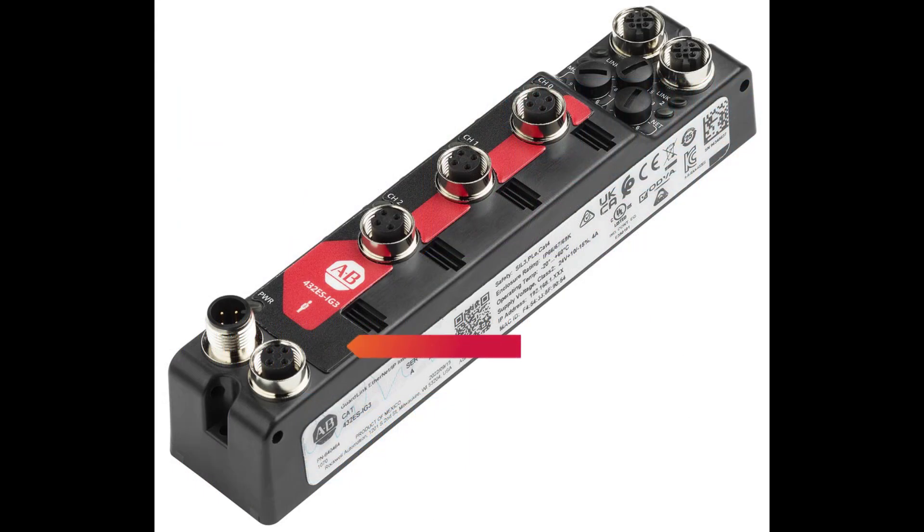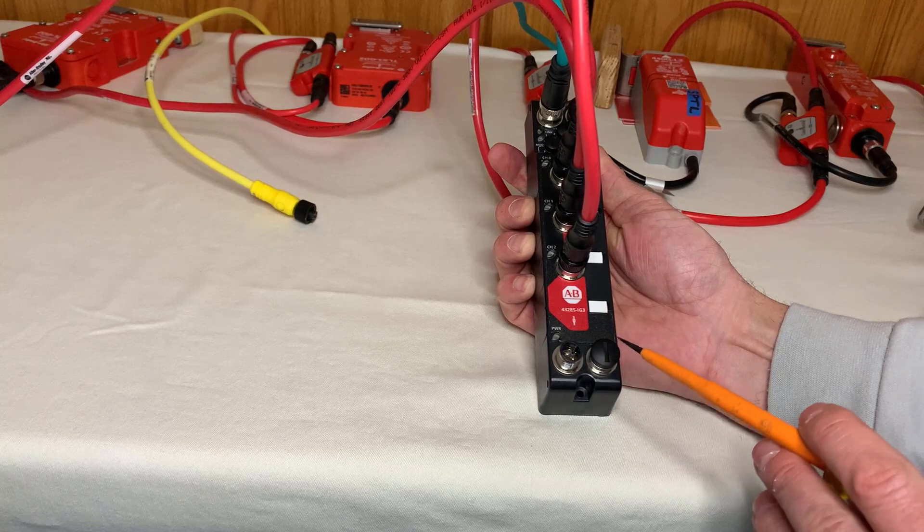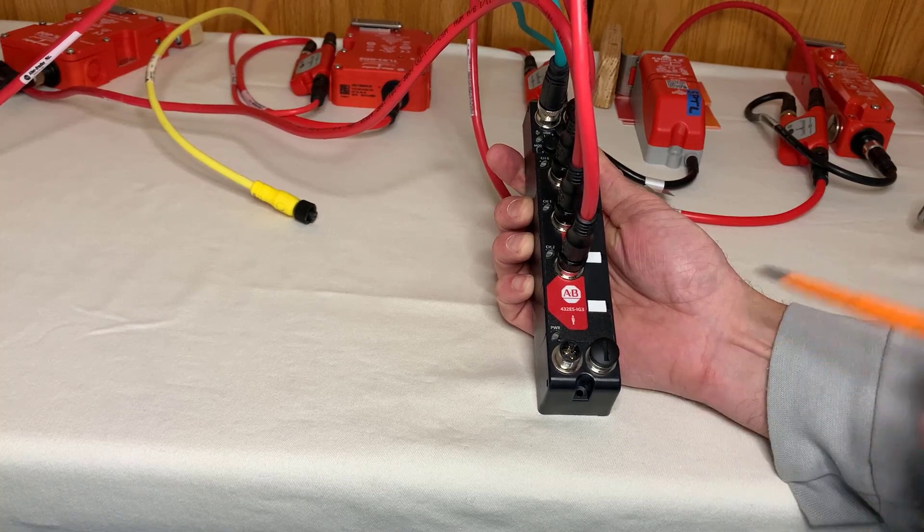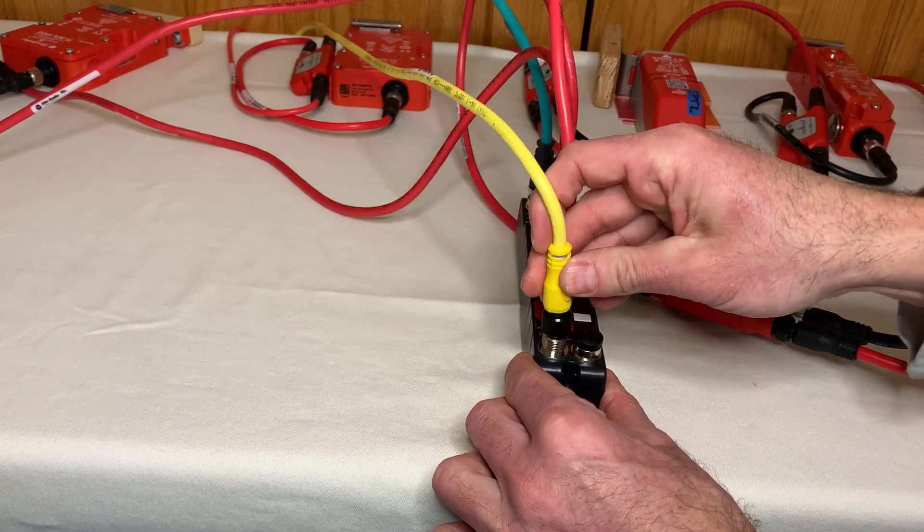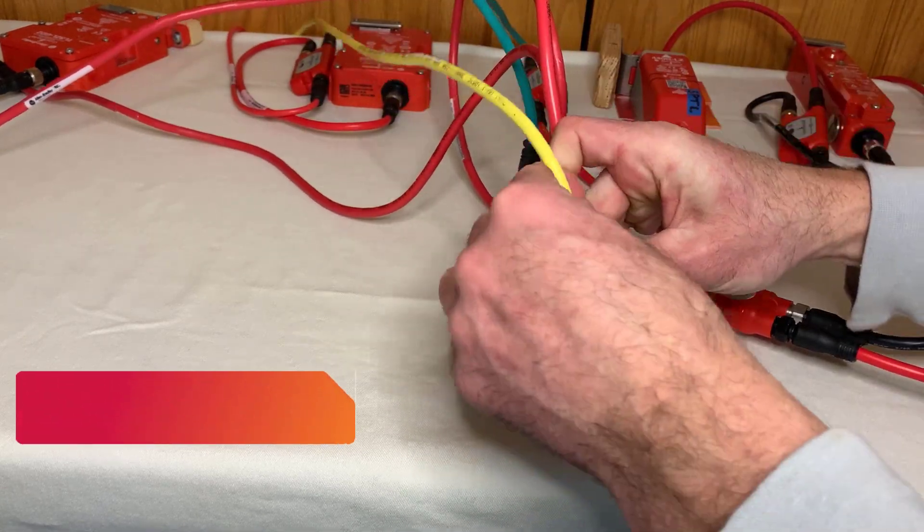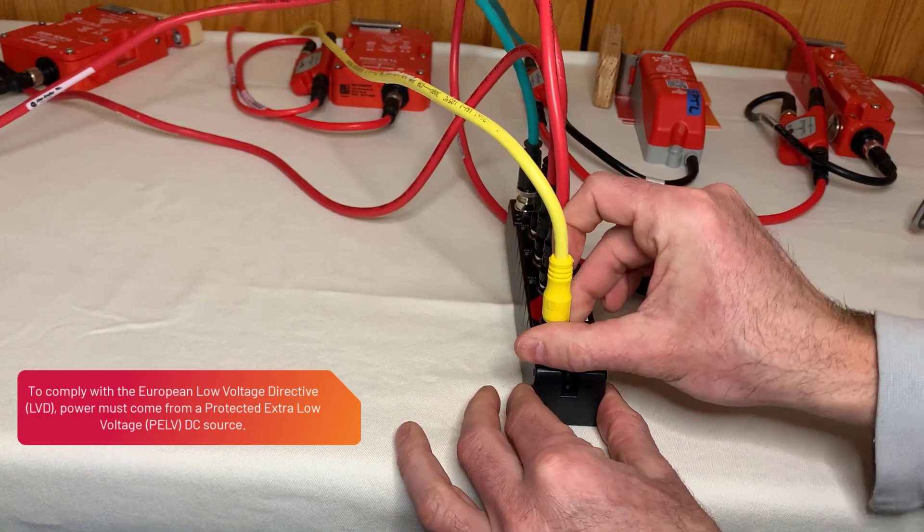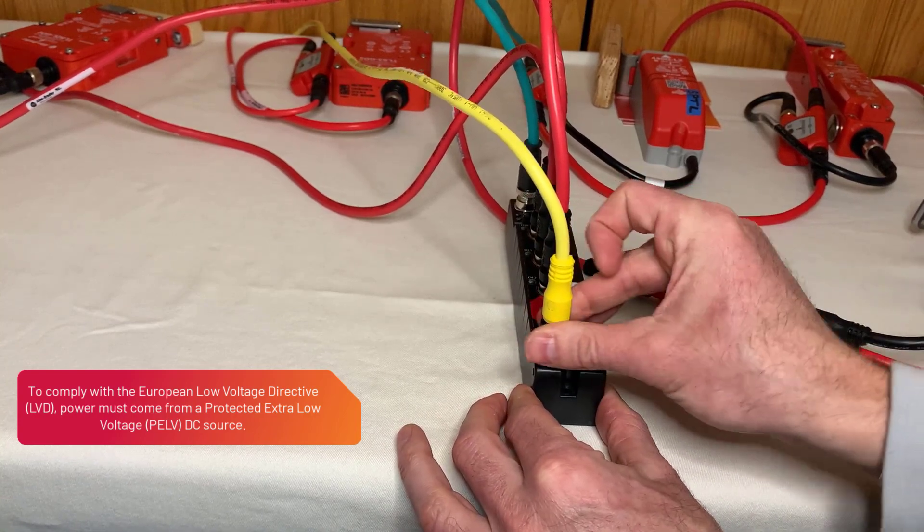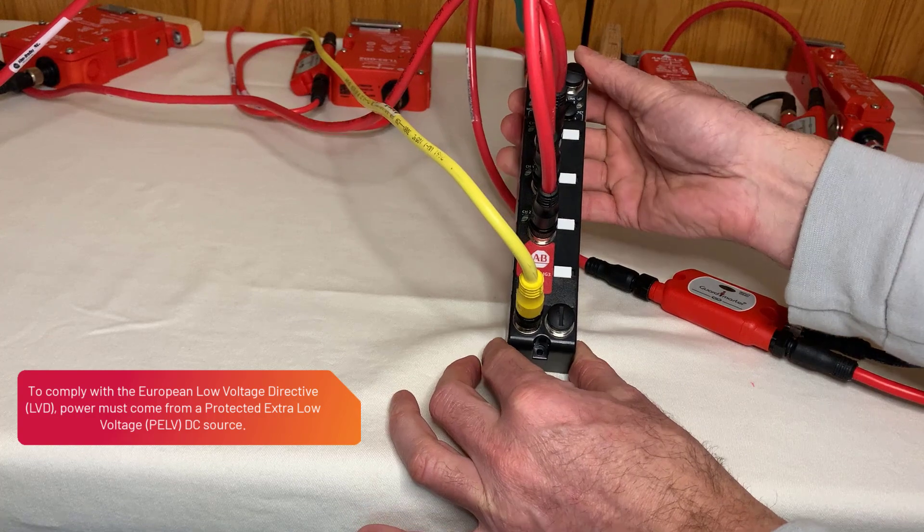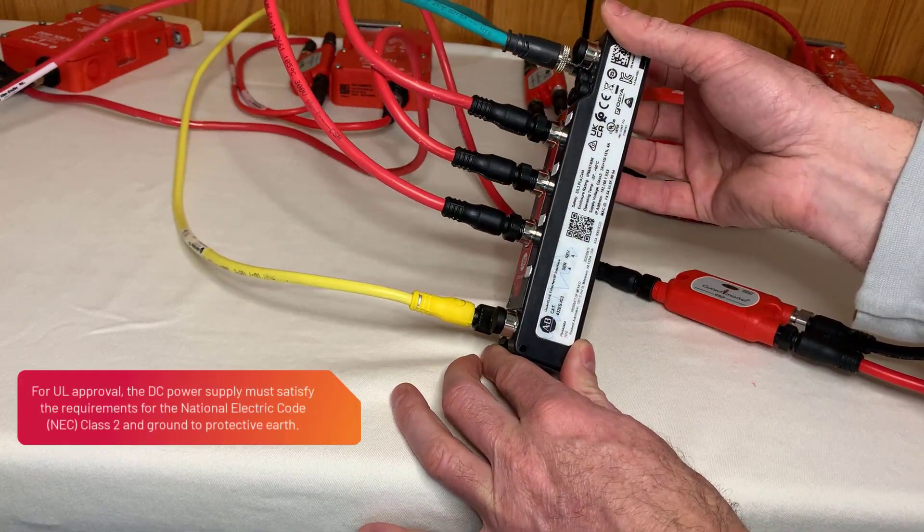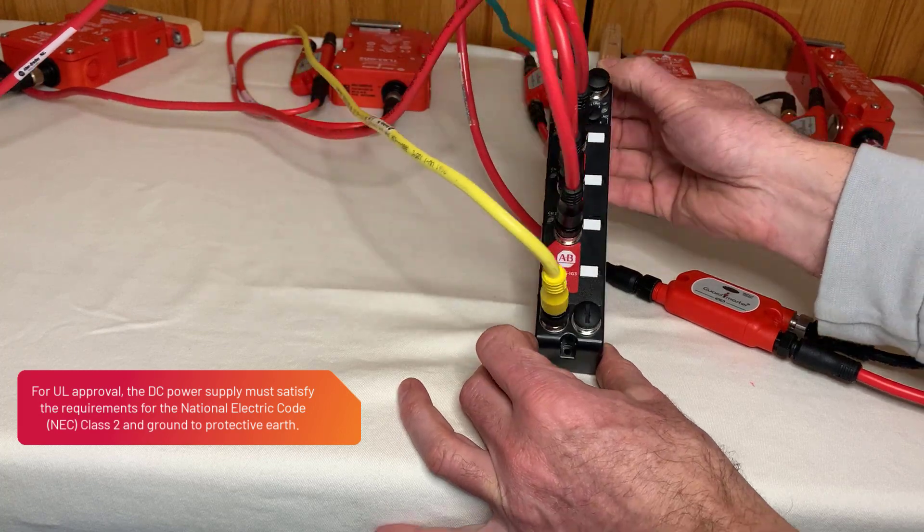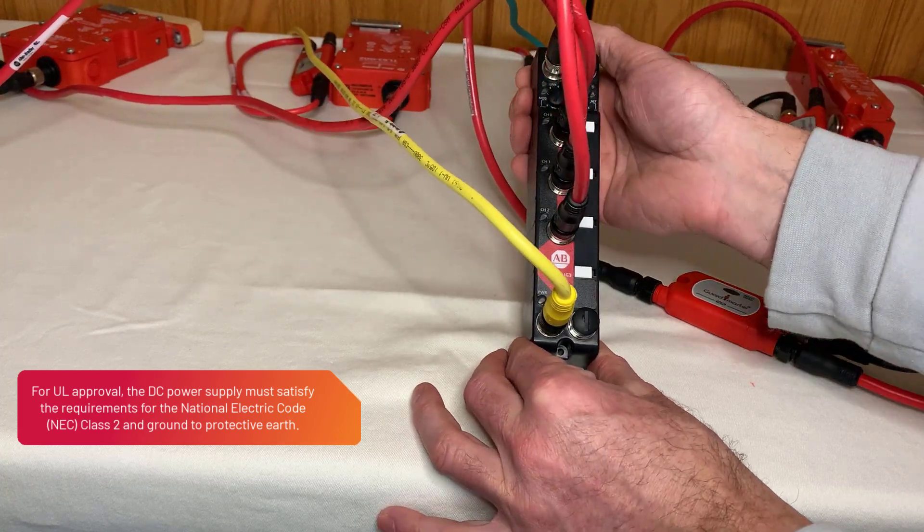The final two plugs on the bottom of the module are for 24-volt DC power. DC power in and DC power out to the next device. Here in the lab, I use whatever 24-volt DC that is available. But please note that to comply with the European Low Voltage Directive, Protective Extra Low Voltage or PELV power supply is required. And to meet Underwriters Laboratory or UL requirements, a National Electrical Code Class 2 power supply is required.